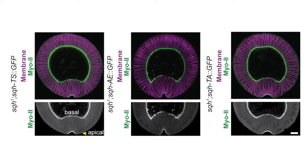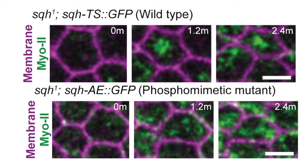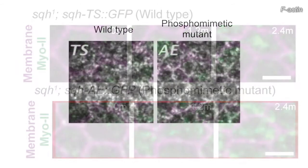The researchers observed the dynamics of these myosin mutants in Drosophila embryos lacking most of their endogenous spaghetti squash molecules. When a phosphomimetic mutant is made — which activates myosin but cannot be directly phosphorylated by ROCK — the myosin is much broader in terms of its accumulation across the apical domain and doesn't appear to undergo a coalescence event.